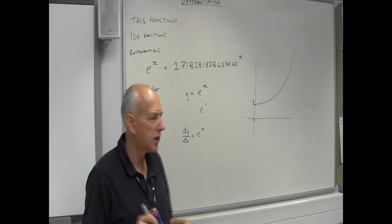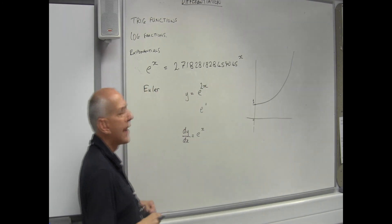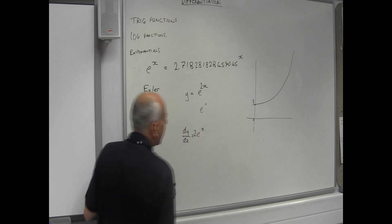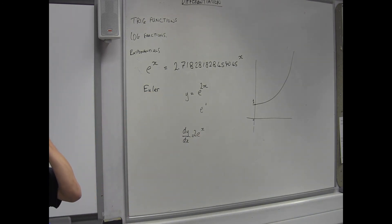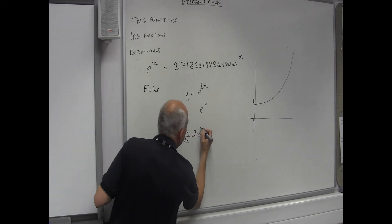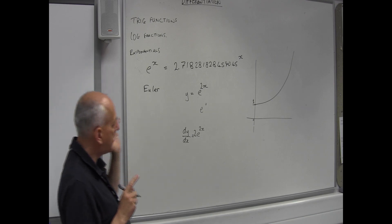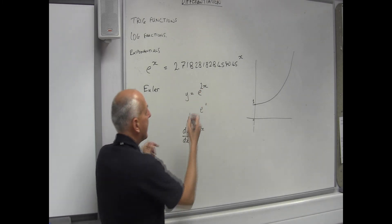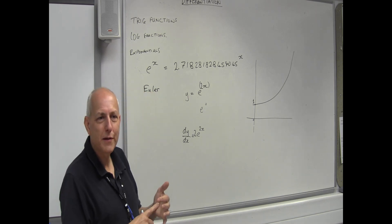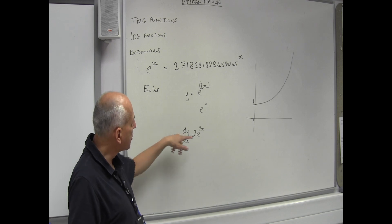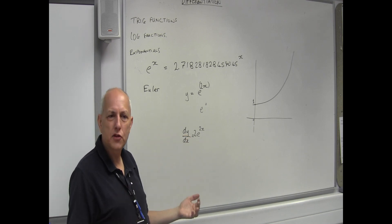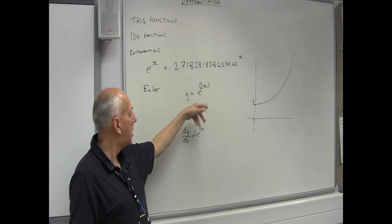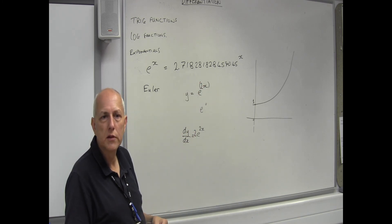It gets a little bit trickier if we put a number in — like 2x. The answer then becomes 2e to the 2x. The 2 drops down to the front. Remember what I said earlier: what's in the bracket stays in the bracket — you can apply that here too. The number drops to the front, and it gets complicated when you've got negative signs, a number in front, or it's divided by something, or any combination of the above.